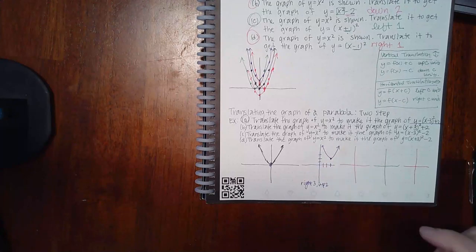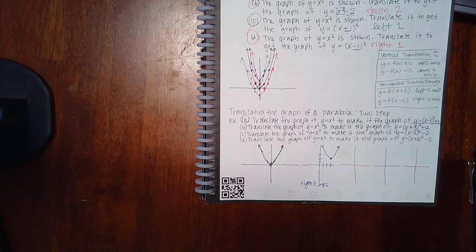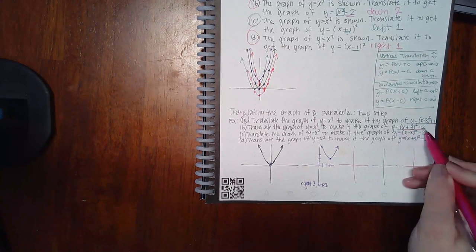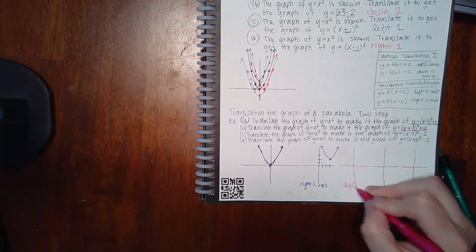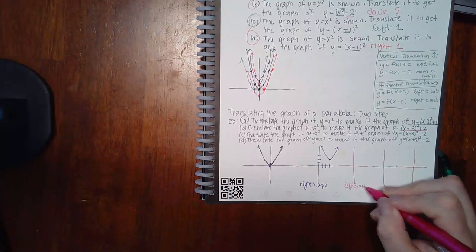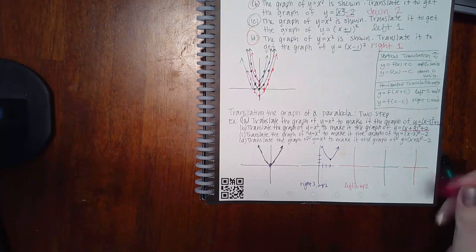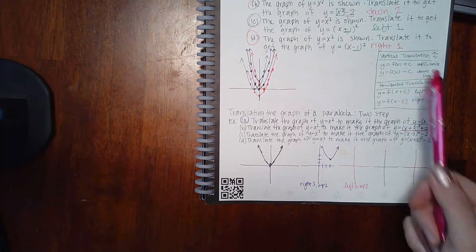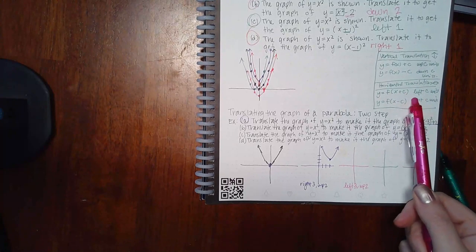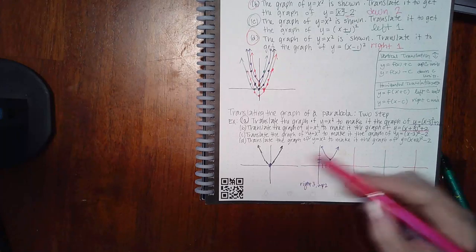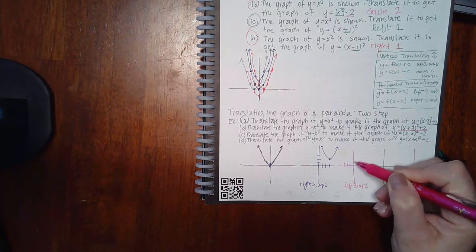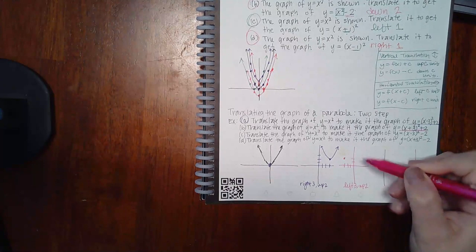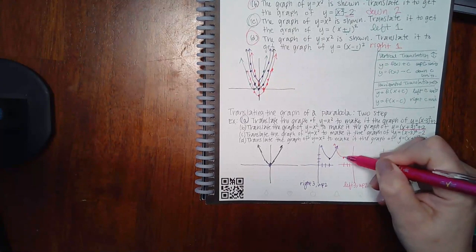For the pink graph: adding three on the inside means go to the left three, and positive two on the outside means go up two. So positive on the outside goes up, positive on the inside goes left. Instead of the vertex being at the origin, it's now going to be three to the left and two up, placing the parabola in that quadrant.